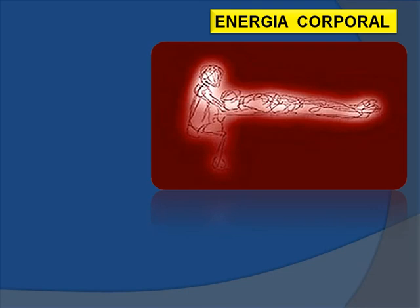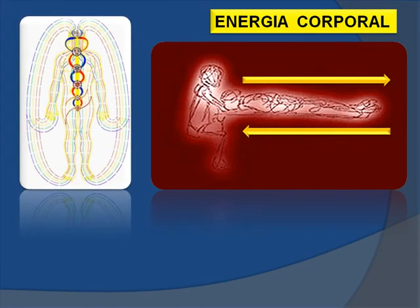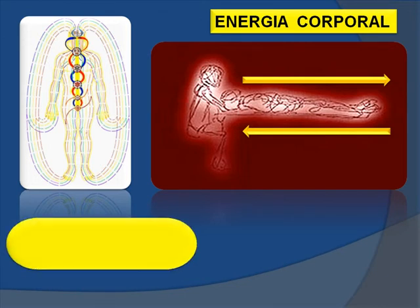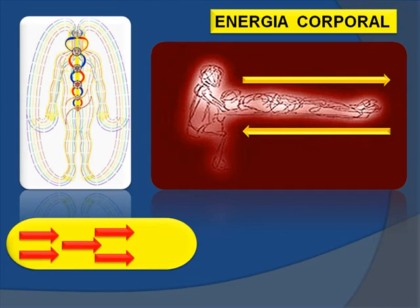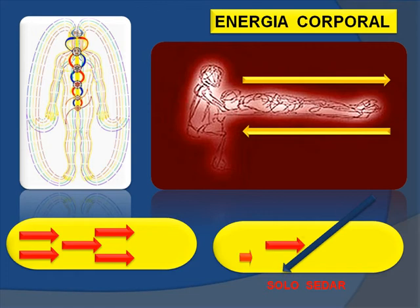Cuando tenemos a un paciente y analizamos la energía corporal, el flujo energético, podemos decir que esta energía fluye en forma descendente y en forma ascendente, básicamente estructurada en forma longitudinal. Estos canales o pasajes, como denominamos a los meridianos, llevan en sí un flujo energético amplio. Y cuando introducimos una agujita en forma angulada, le estamos diciendo al meridiano o al flujo energético que vamos a sedar o entorpecer el paso de la energía.